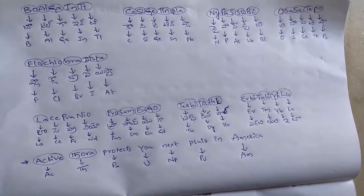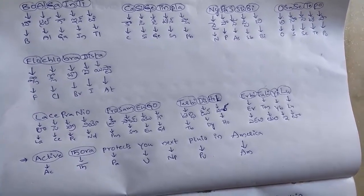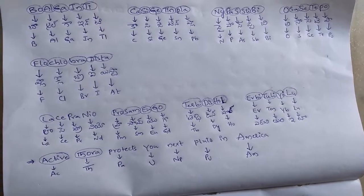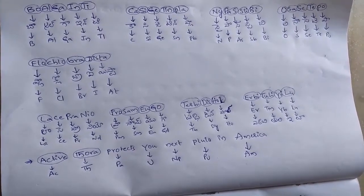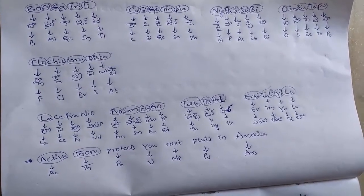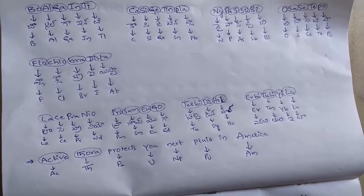Next, Kasi Z Tinpla. Carbon group. Kasi Z Tinpla. C means carbon, Si means silicon, Z means germanium, Tin means tin, Pla means lead. Kasi Z Tinpla.